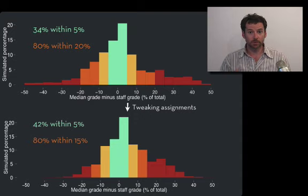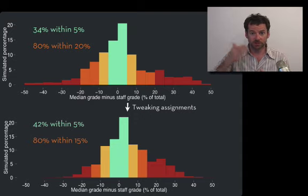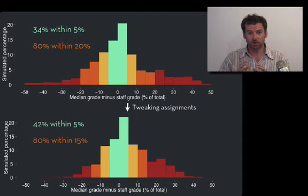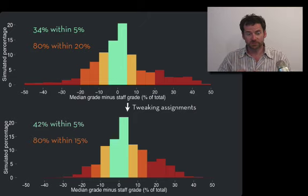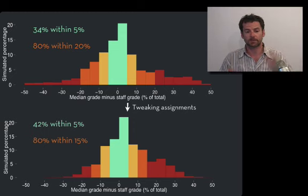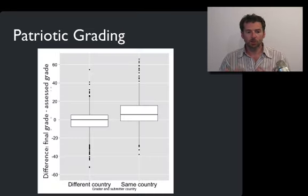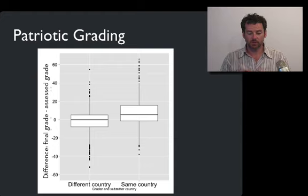The changes that we made in terms of using data to revise the rubrics and giving students feedback about their grading accuracy meant that in the second iteration of the class, the agreement between raters improved over the first iteration. Notably, one thing we saw is that students graded other peers from the same country about seven percent higher than those from a different country.